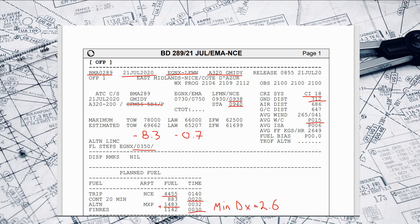With that done, we've just arrived at dispatch and picked up the paperwork. The first thing we'd want to do is check that it is actually the correct paperwork. Today's flight is BD 289, the 21st of July, East Midlands to Nice — that's what we're expecting and we can cross-check that along the top. It's an A320, registration Golf Mike India Delta Yankee. So it is the correct paperwork.